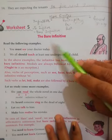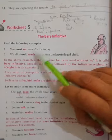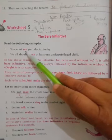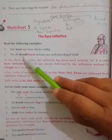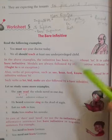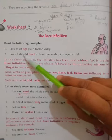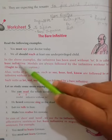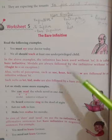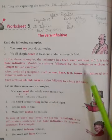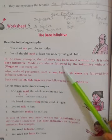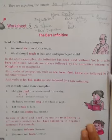The bare infinitive — read the following examples: 'You must see your doctor today.' Here we have a modal and verb first form. 'We all should teach at least one underprivileged child.' Again we have a modal followed by verb first form. In the above examples, the infinitives have been used without 'to'. These are called bare infinitives. Modals are always followed by the infinitive without 'to'.